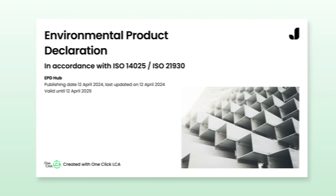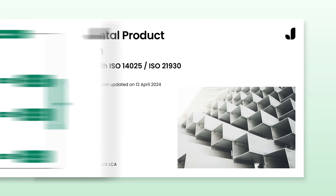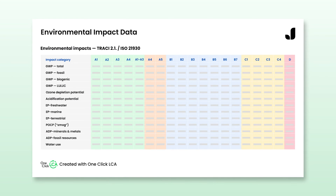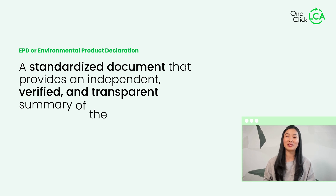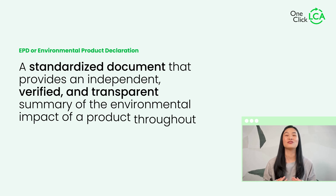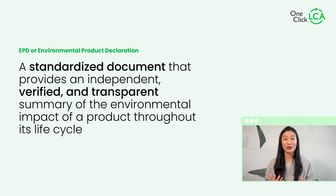An Environmental Product Declaration, or EPD, is a standardized document that provides an independent, verified, and transparent summary of the environmental impact of a product throughout its life cycle, based on the information from a life cycle assessment.